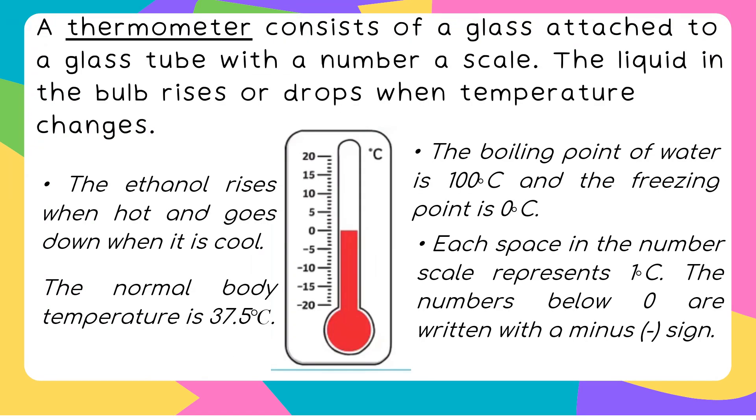The left side again is the Fahrenheit and C is for the Celsius. A thermometer consists of a glass bulb attached to a glass tube with a number of scales. The liquid in the bulb rises or drops when temperature changes. Masasabi natin, kapag tumaas yung red na yan, ibig sabihin nagbabago, umiinit pag tumataas. Pag bumababa yan, ibig sabihin lumalamig or coldness yun. The ethanol rises when hot, tumataas yung degrees Celsius, and goes down when it is cool. The normal body temperature is 37.5 degrees Celsius. Meaning, 37.5 and below, wala kang lagnat. Pero pag tumaas yan, 37.6 and above, ibig sabihin mainit ka na, may lagnat na ang isang tao.